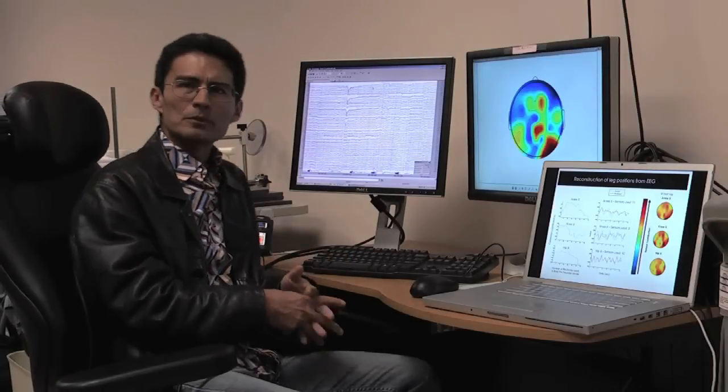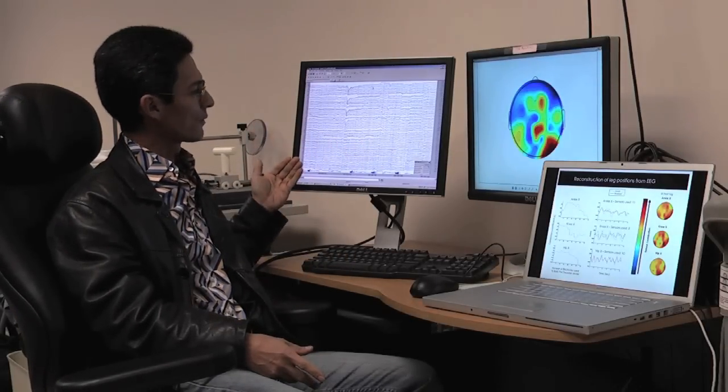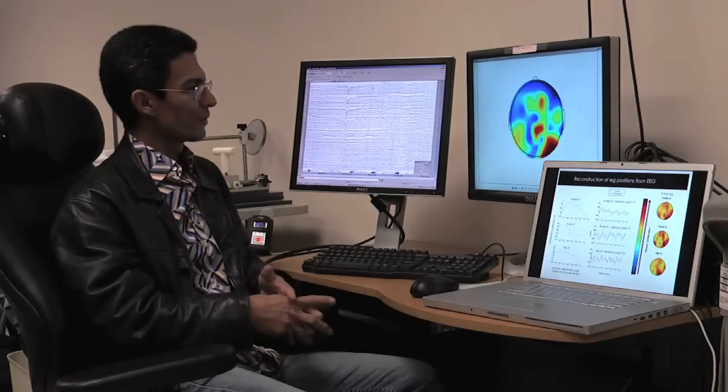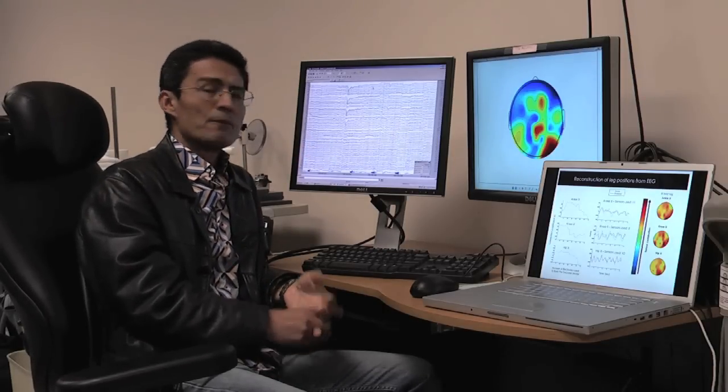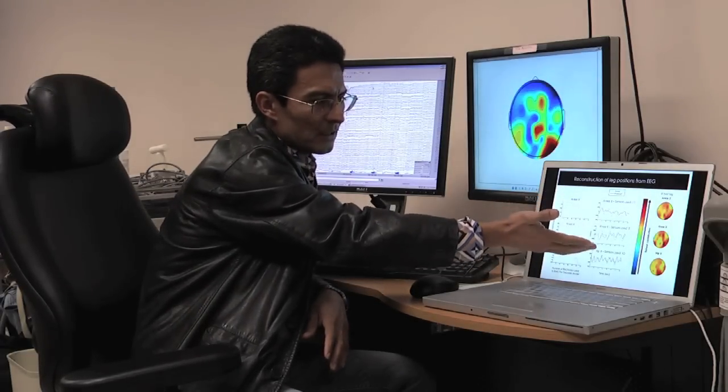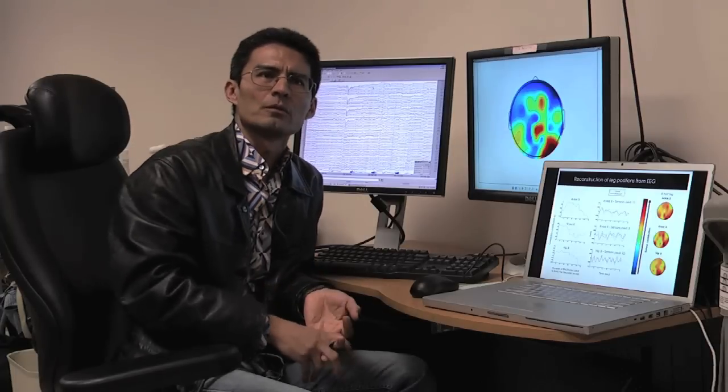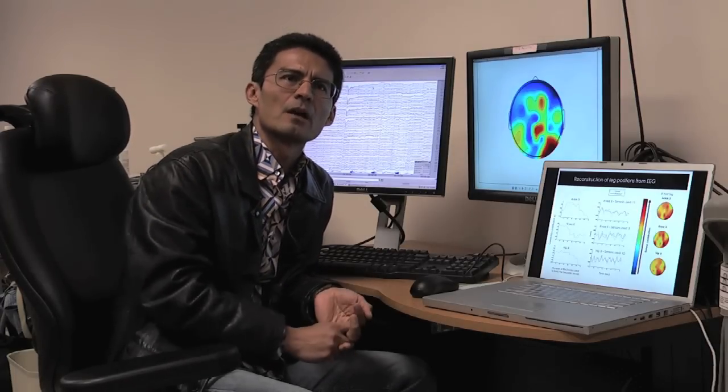These are examples of the brain signals that we record with electroencephalography from 64 sensors. I'm very happy to report that in fact it is possible to reconstruct the individual trajectories of the ankle, knee, and hip joints in the left and right legs.